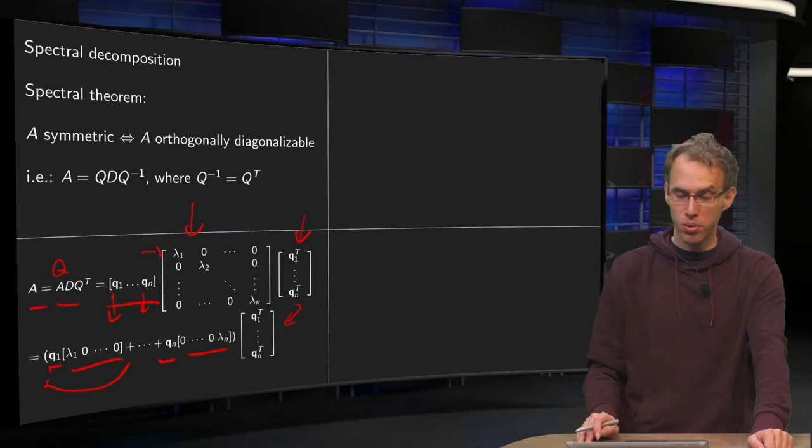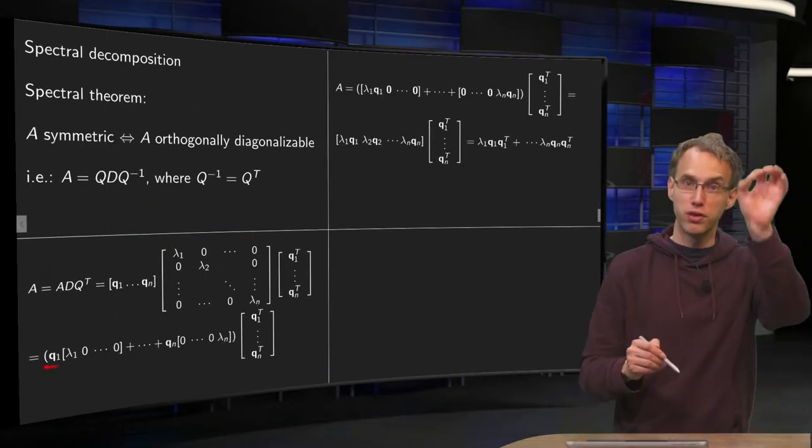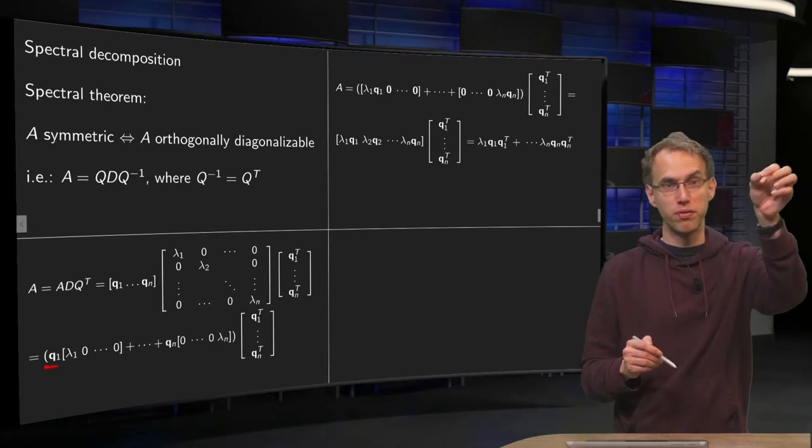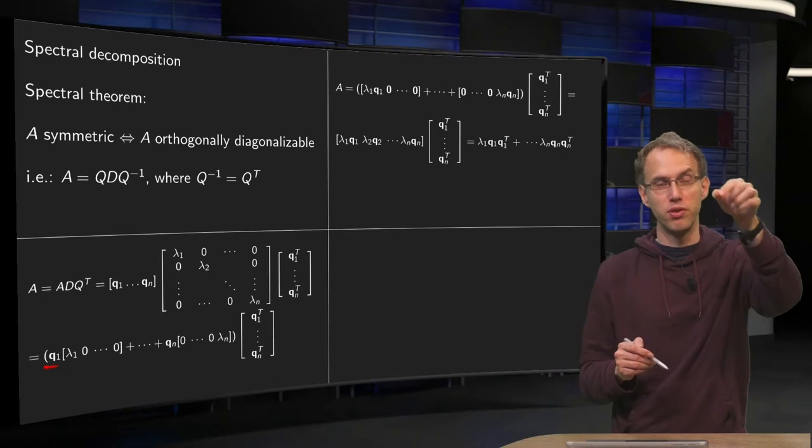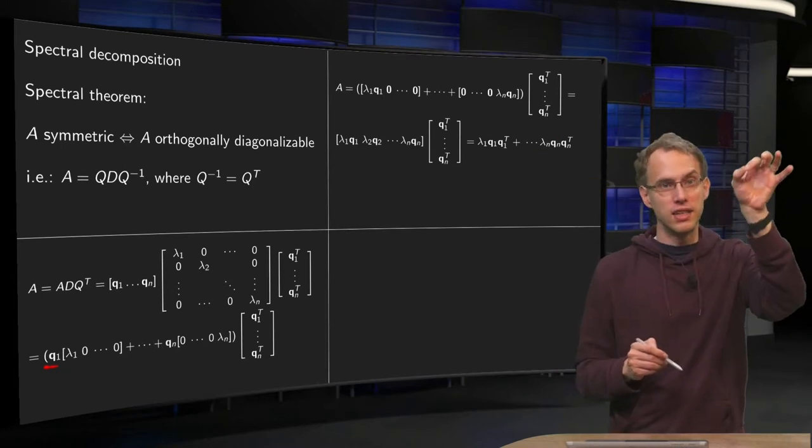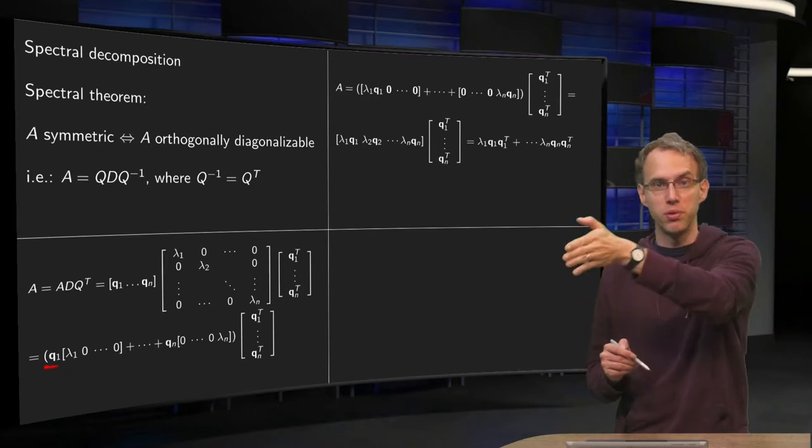Now we are going to compute these products. For that we are using the row column rule. So what do we do? We take the first component of Q1 times lambda 1 gives us lambda 1 times Q1 and then all zeros.